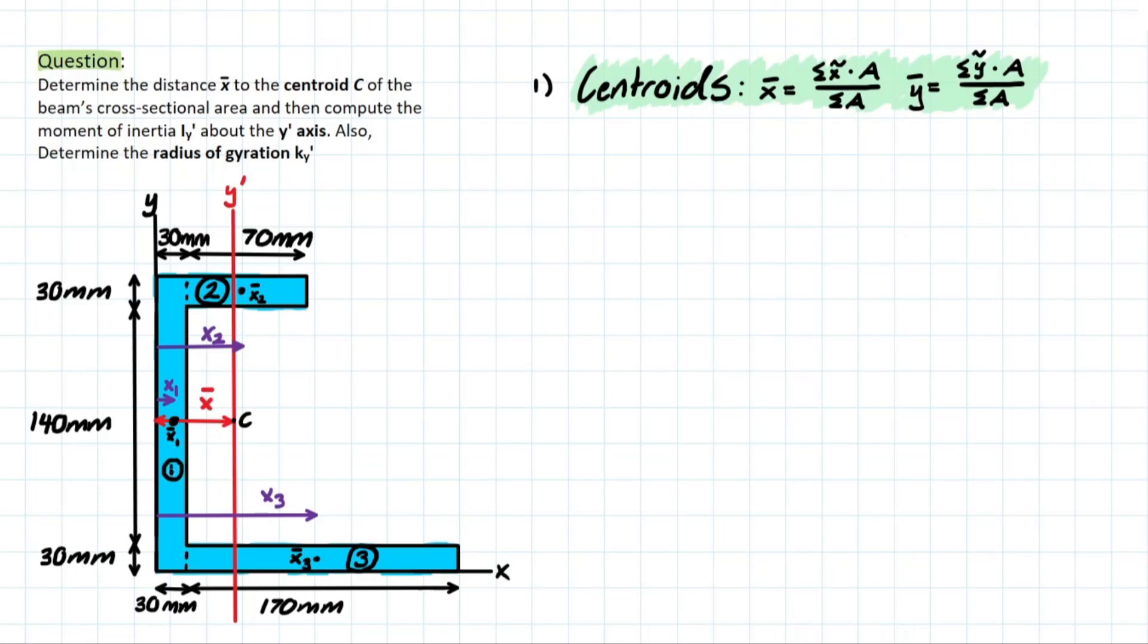So we can see shape one, we have centroid X1 bar, a distance X1 away from that point, and then similarly with X2 and X3. So what we need to do is find these values, plug them into our X bar formula to solve for that value of X bar.